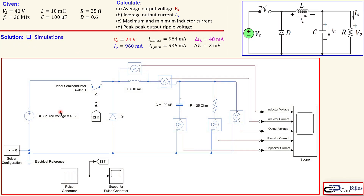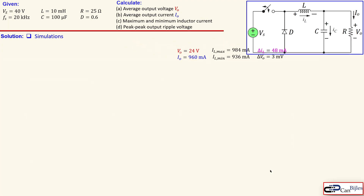Here we depict the Simulink circuit we have used. These are the Simscape elements — you see the inductor, the capacitor, the resistor, and our DC voltage source at 40 volts. This pulse generator creates a PWM signal with a duty cycle of 60% or 0.6, which is applied to this ideal switch to create the output voltage and output current. These will be recorded by the scope.